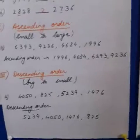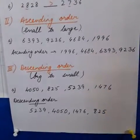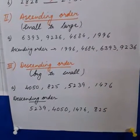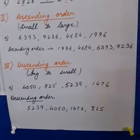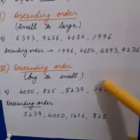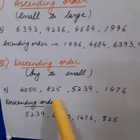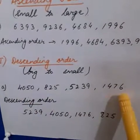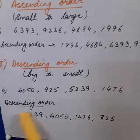Moving to the next part, descending order. Descending order means arranging the numbers from big to small. This is the reverse of ascending order. These are the numbers here. We will arrange them in descending order.